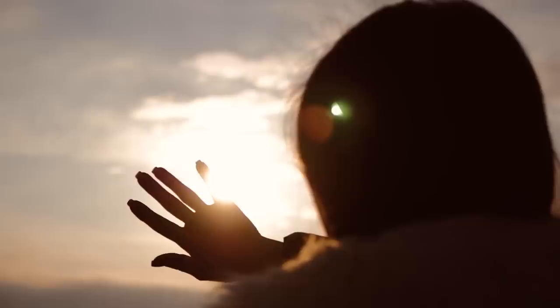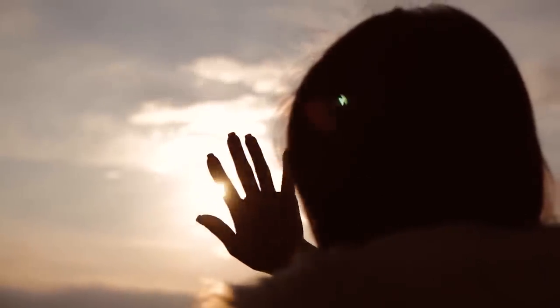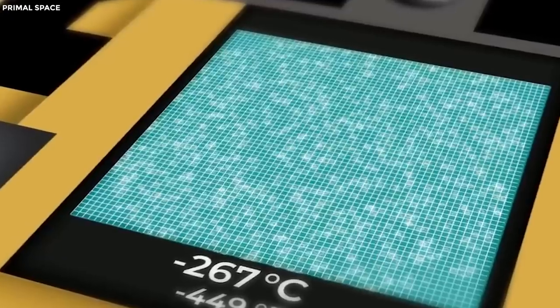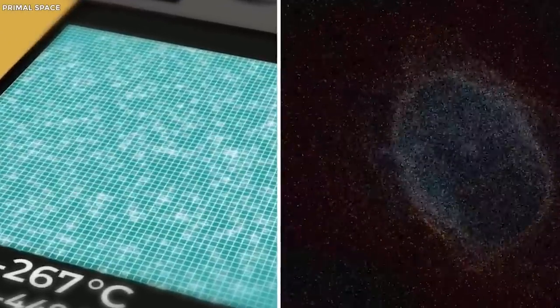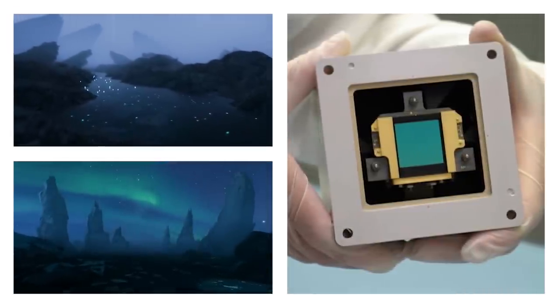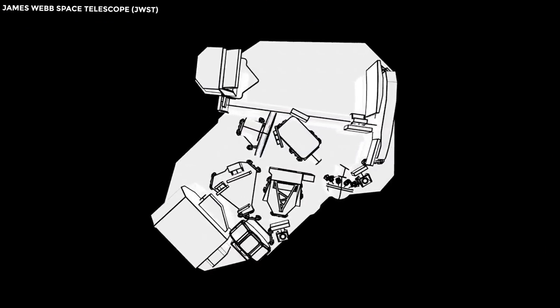NIRCam also has coronagraphs, like your hand blocking the sun for a clearer view of the road. Similarly, a coronagraph helps see faint stars and galaxies. NIRCam can't reveal everything like water or air on planets. NIRSpec, another tool does that by studying light's spectrum.